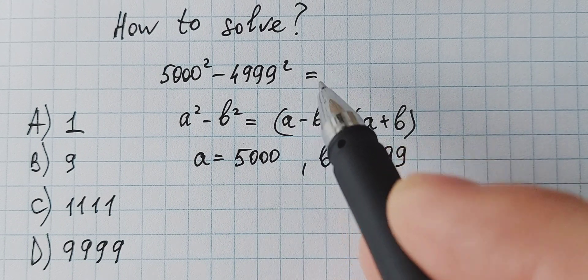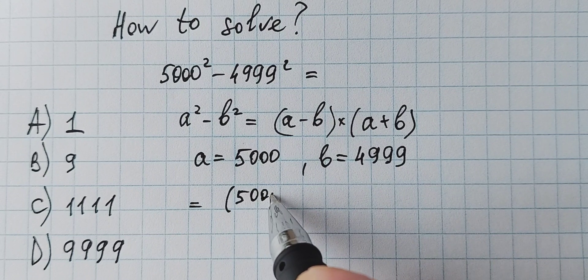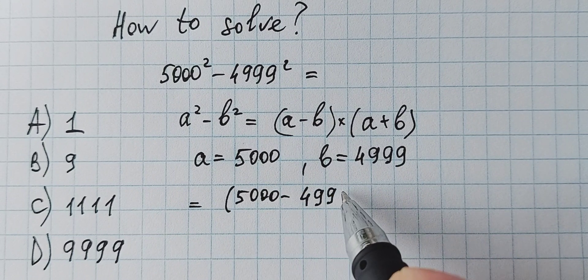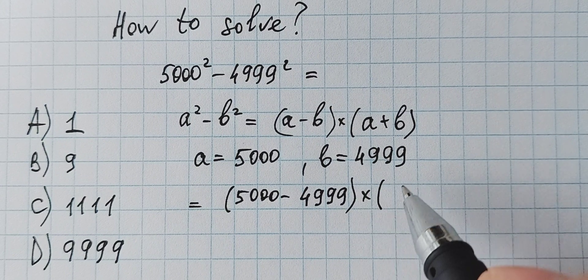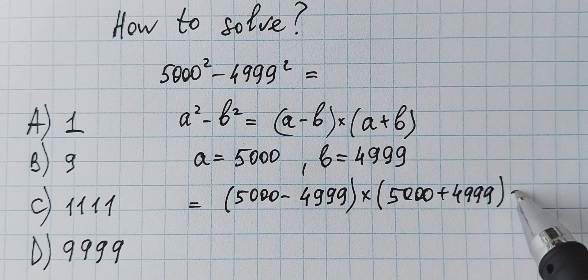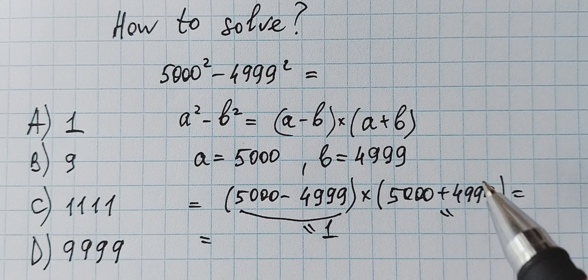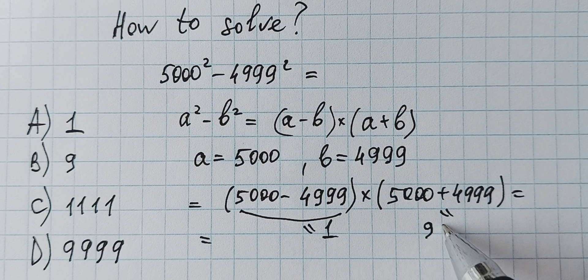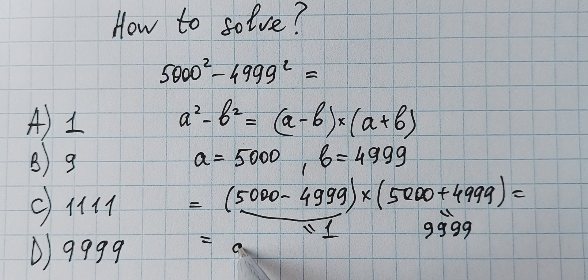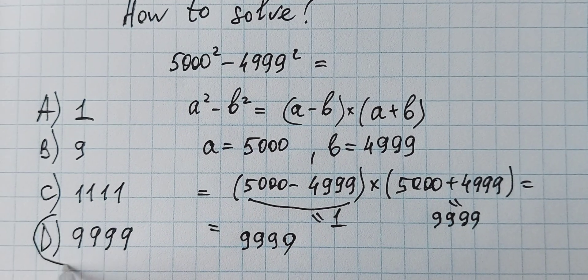OK, we have 1 times 9099, which equals 9099. So, the answer is D.